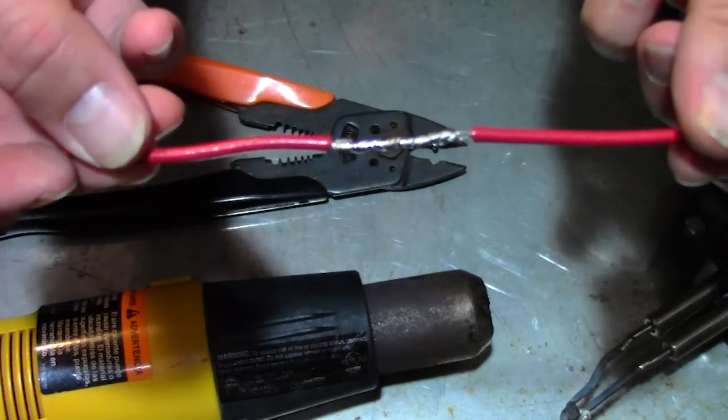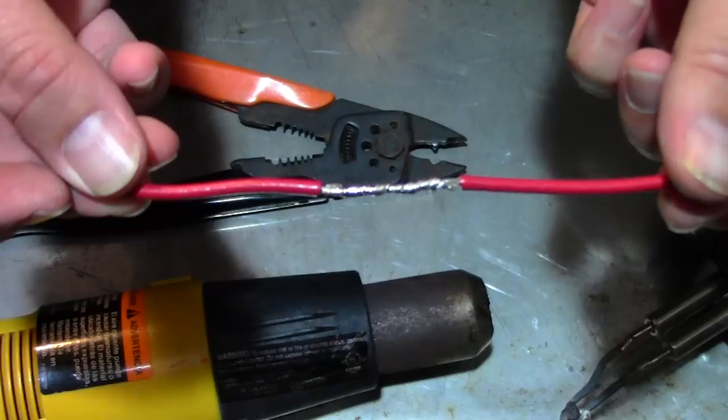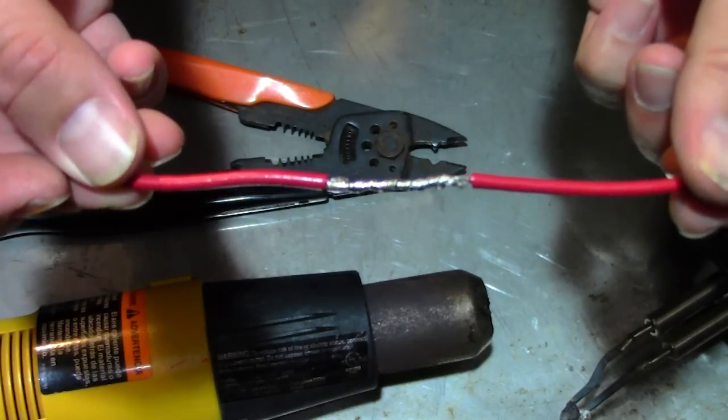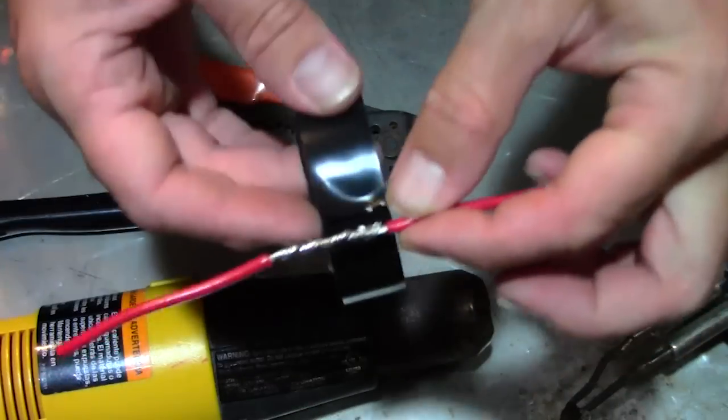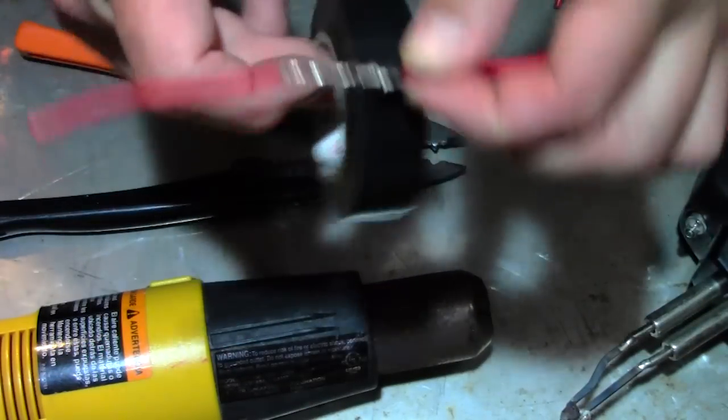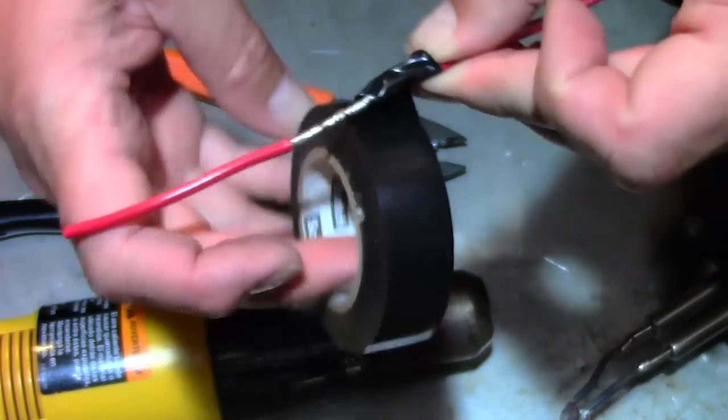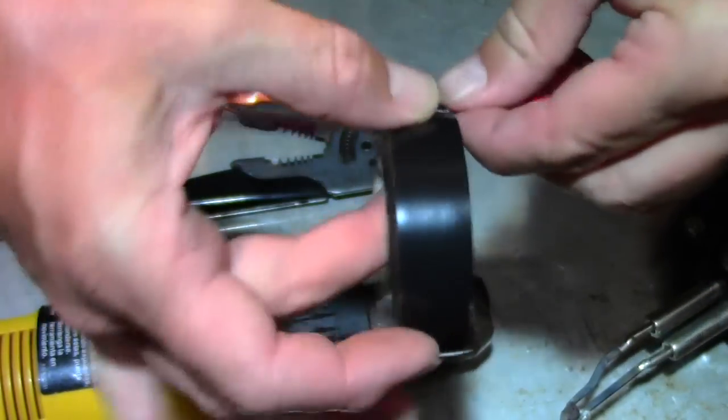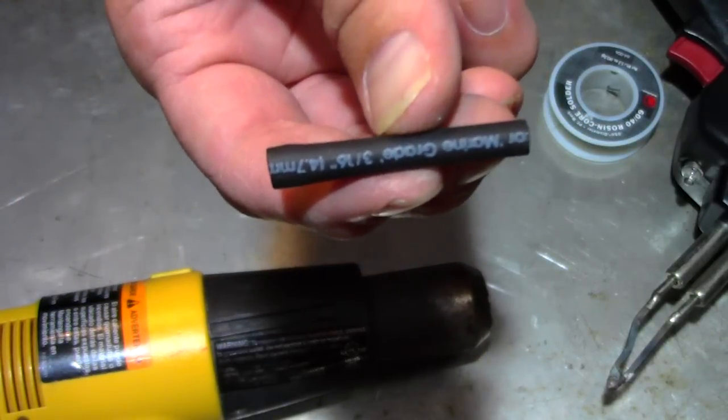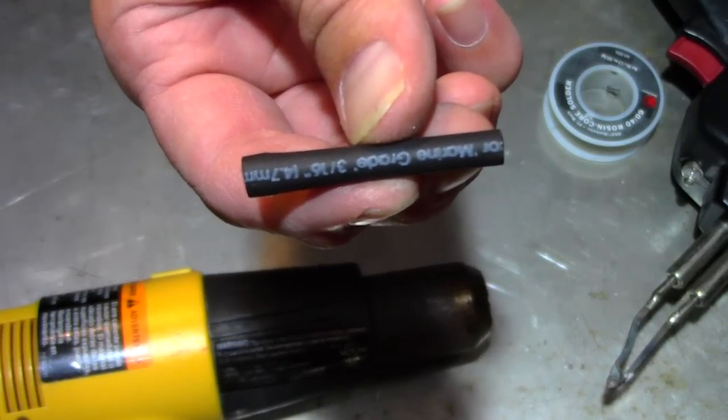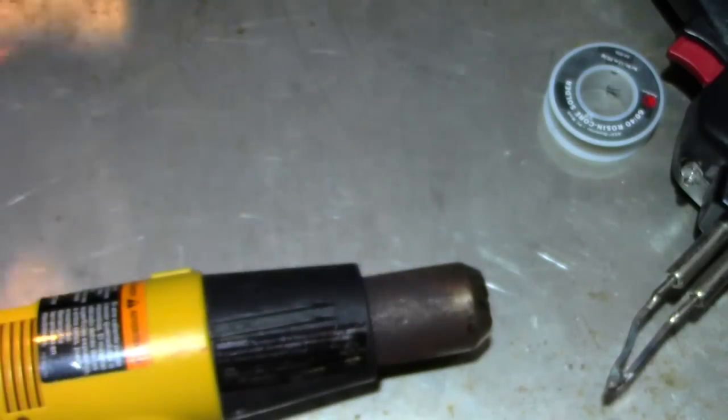You can tape this connection if you don't have heat shrink, running tape around it in the method we did earlier. However, the preferred method is to use heat shrink. This is adhesive-lined, marine-grade heat shrink, which is better than taping.